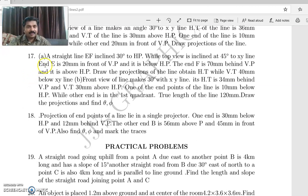Number 17: A straight line EF inclined 30 degrees to HP while the top view is inclined at 45 degrees to XY line. Point E is 20mm in front of VP and is below HP, and F is 70mm behind VP.